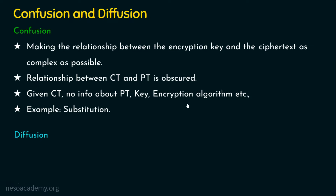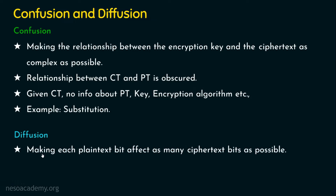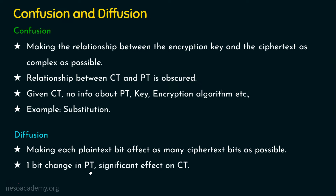Now let's move on to diffusion. In confusion, there is no relationship between the ciphertext and the plaintext. Whereas in diffusion, this is the process of making each plaintext bit affect as many ciphertext bits as possible. If you make a small modification in the plaintext and the ciphertext changes drastically, then there is diffusion property. That is, if there is one bit change in the plaintext and there exists a significant effect on the ciphertext, then this is the diffusion property. In classical encryption, substitution is under confusion and transposition or permutation is under diffusion.